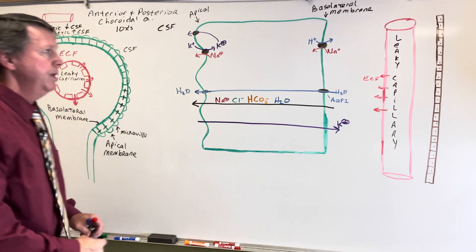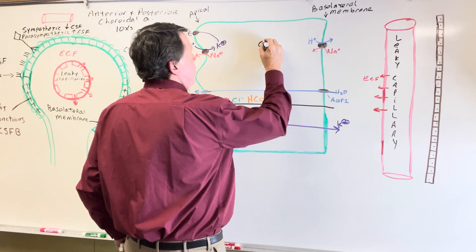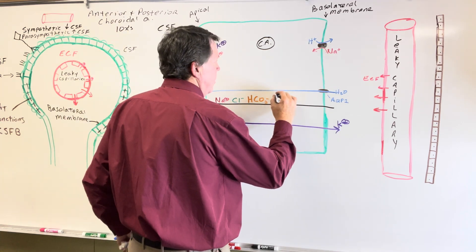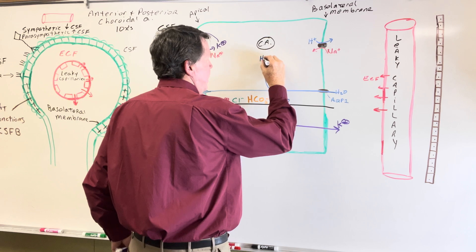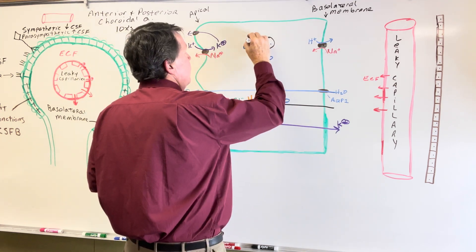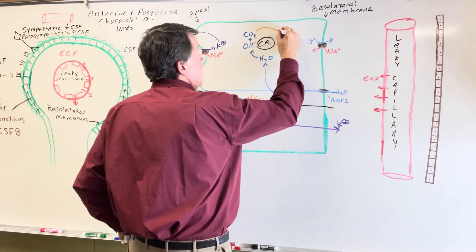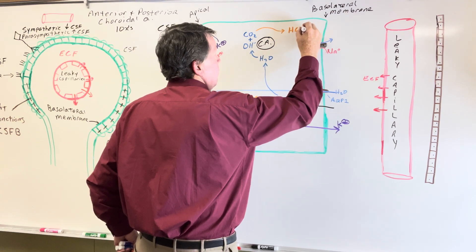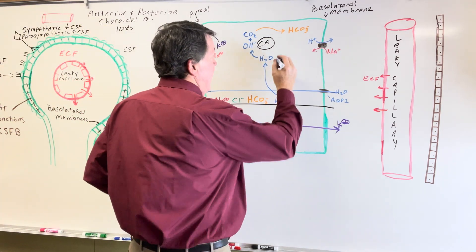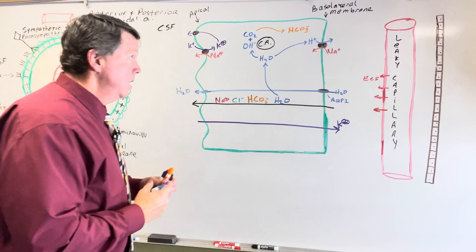Water can also enter the cell, where there is carbonic anhydrase inside. Carbonic anhydrase takes that water — H₂O — and splits it into a hydroxide, which then mixes with carbon dioxide to become bicarbonate. The hydrogen produced in this reaction is also going to help exchange and bring sodium in on the basolateral membrane.